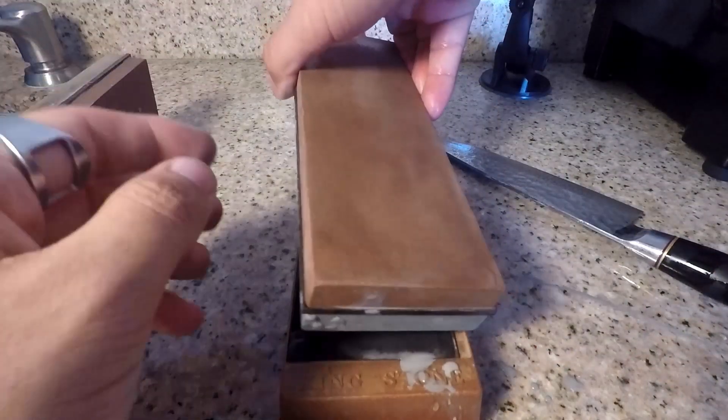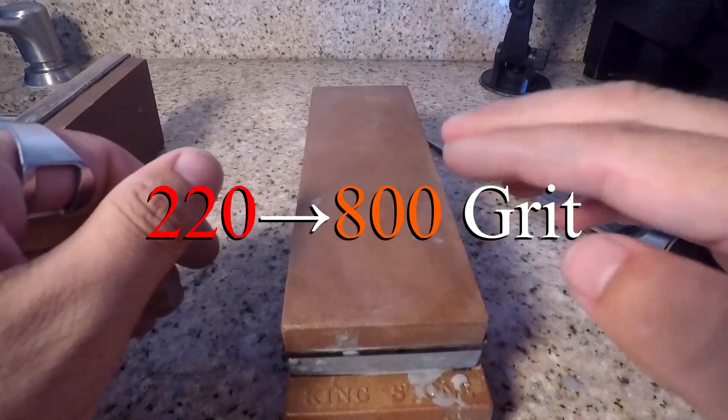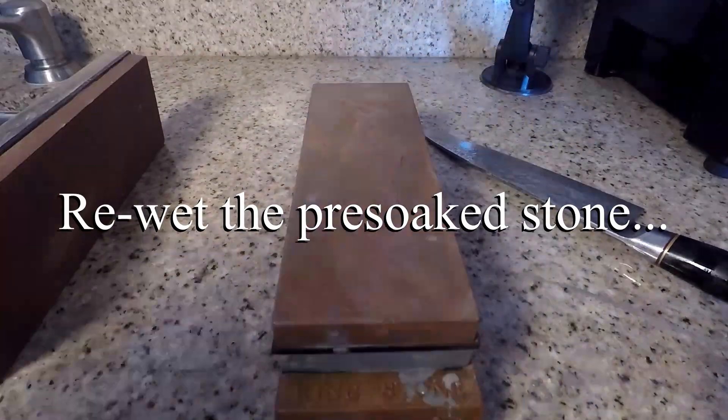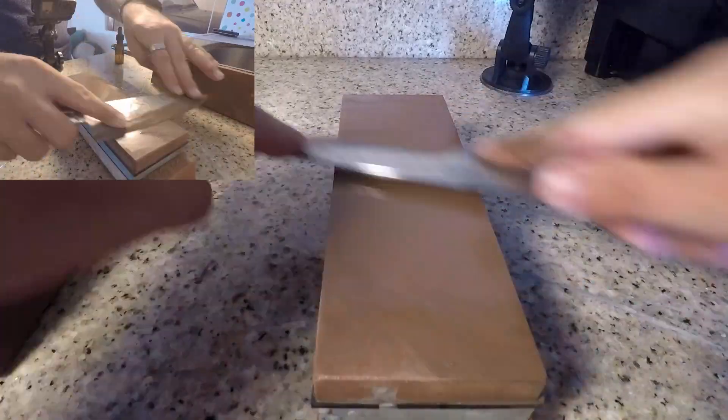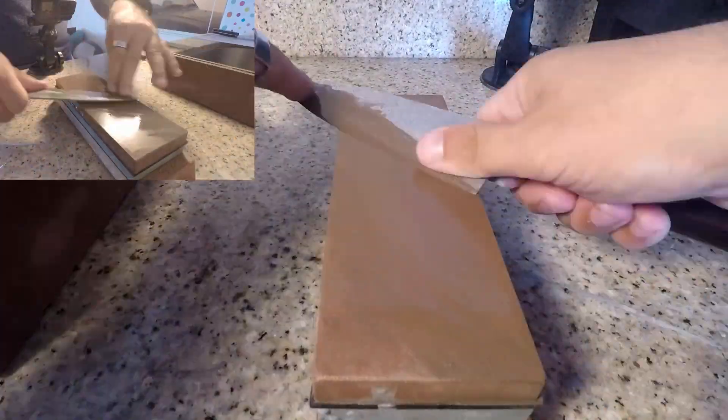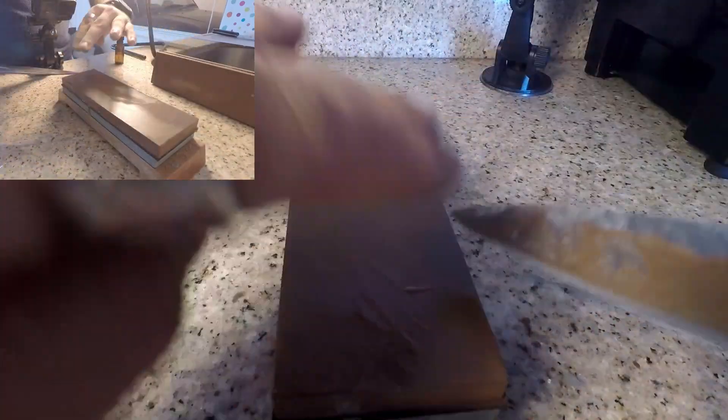Now that we've achieved that we're gonna go ahead and repeat the process on the next grit. So we've moved from the 220 to the 800 grit now. So now that I've went back and forth several times I'm all the way down to number four again and with the sets of four I'll go ahead and do it a couple of times.